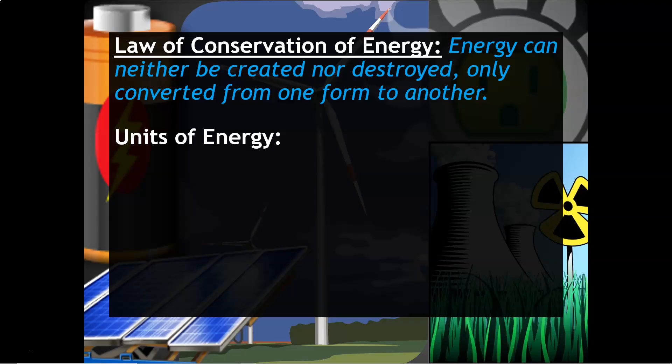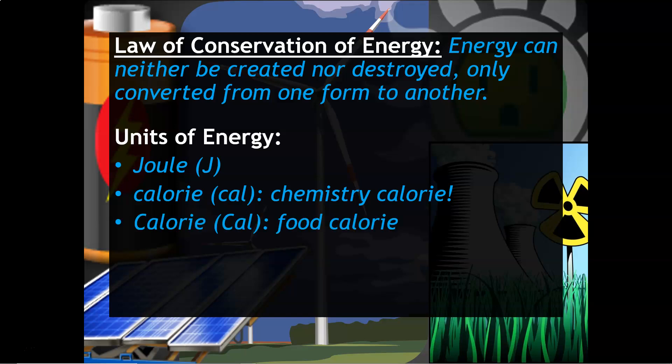There are a few units of energy that you need to be familiar with. The first is the joule. The second is calorie, which is the chemistry calorie. The third is the food calorie. Notice the difference in the symbols. One food calorie is the same as a thousand chemistry calories, so really one food calorie is a kilocalorie. And then one calorie also equals 4.18 joules.